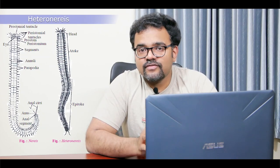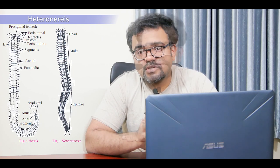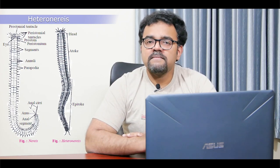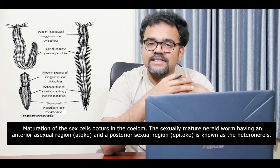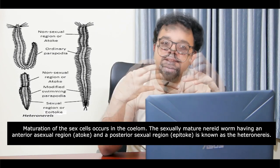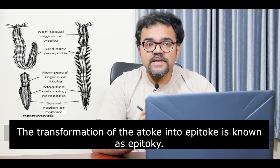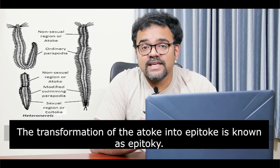Fertilization takes place externally and the fertilized eggs develop into a characteristic larva called the trochophore larva. Sometimes Nereis exists as heteronereis. During most of the year, the animals are devoid of reproductive organs, and during this phase the sexually immature animal is known as the atoke. As the breeding season approaches, sex cells are budded off from the coelomic epithelium throughout the body, and maturation of sex cells occurs in the coelom. The sexually mature Nereis worm having an anterior asexual region (atoke) and a posterior sexual region (epitoke) is known as the heteronereis. The transformation of the atoke into an epitoke is known as epitoky, which involves the transition from a benthic non-reproductive organism to a pelagic reproductive organism.